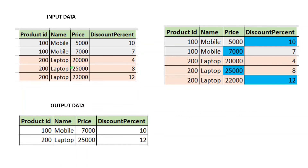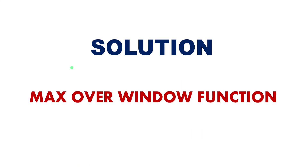So basically, in this duplicate data I have to find the maximum value of each column for a particular product ID and produce output data by removing duplicates. The solution is very simple — we can use the window function max over. Using max over along with certain steps, we can achieve this particular result. I can give a demo to explain those steps. Let's get started with the demo.